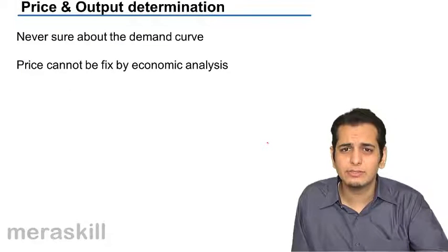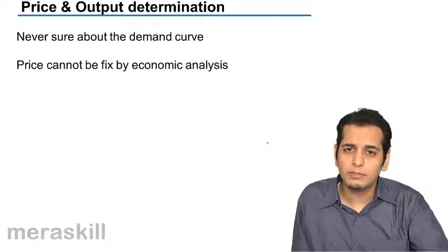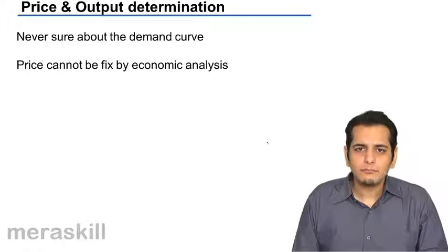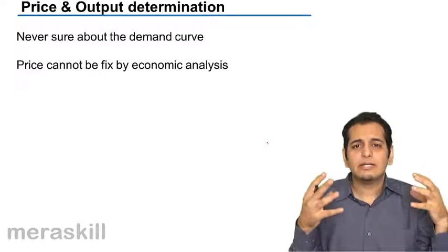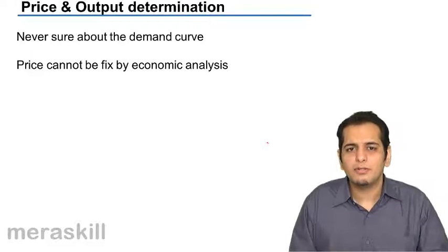Now why is price and output determination not possible in oligopoly? It's because the oligopolistic market is interdependent on the sellers. The sellers are interdependent on themselves rather.